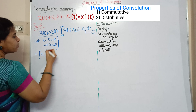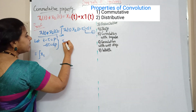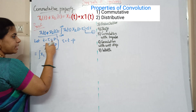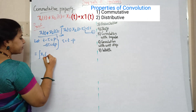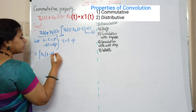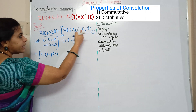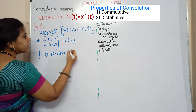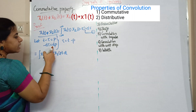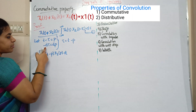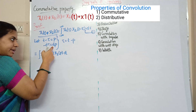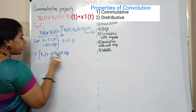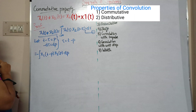Integral of x1 of tau, where tau equals t minus p. x2 of t minus tau equals p. Minus d tau equals dp. So d tau equals dp. The integral of x1 of tau equals to this.